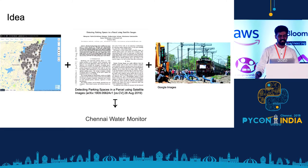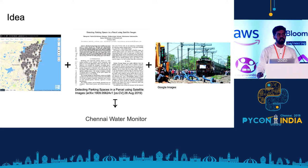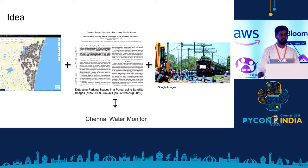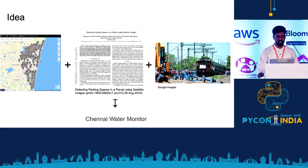So the idea is this: I have locations of all the water points and an approach to find something on a base. For those who don't know what the third image is — early this year, Chennai city was running out of water and we had to bring water from a nearby place called Jolarpet through trains. All this combined together is what I was building: the Chennai Water Monitor.